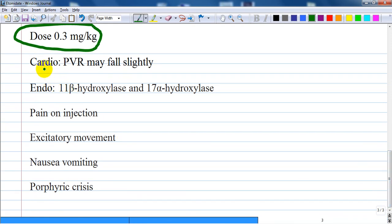Cardiovascular system: decreased peripheral vascular resistance may fall slightly during induction while myocardial oxygen supply, contractility, and blood pressure remain largely unchanged.